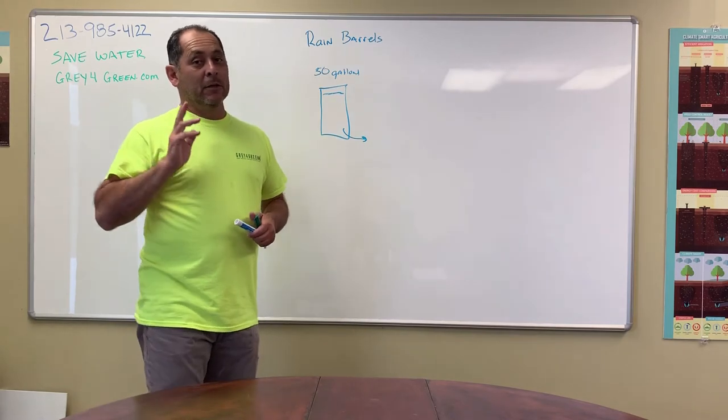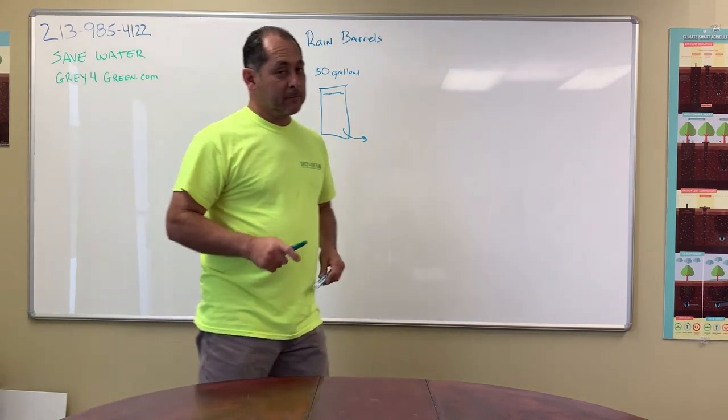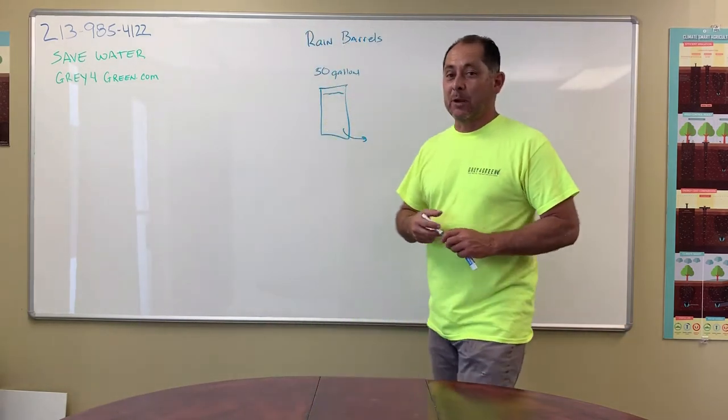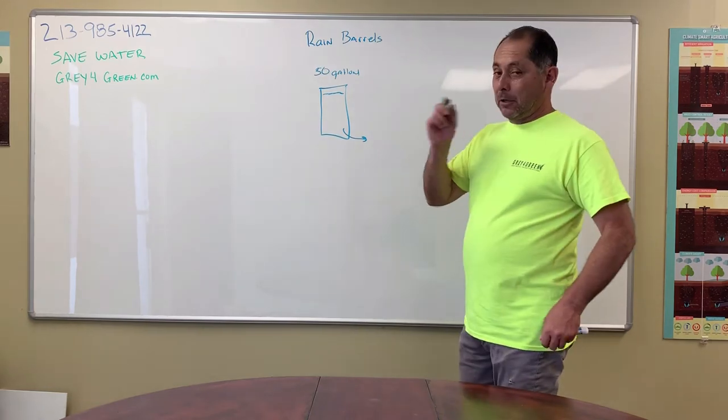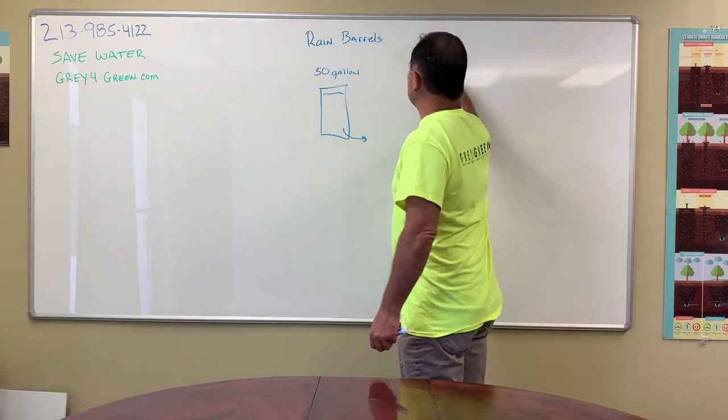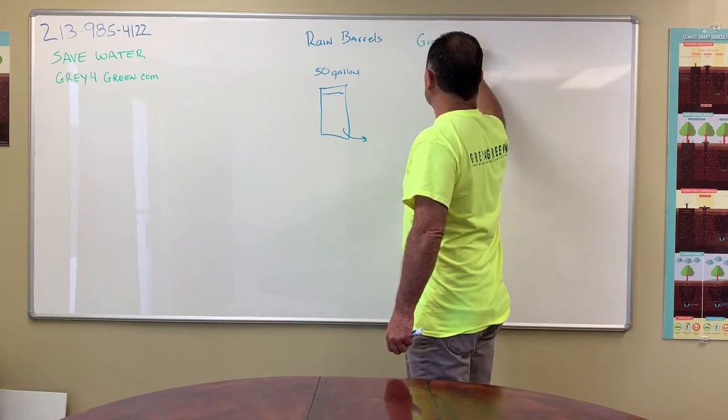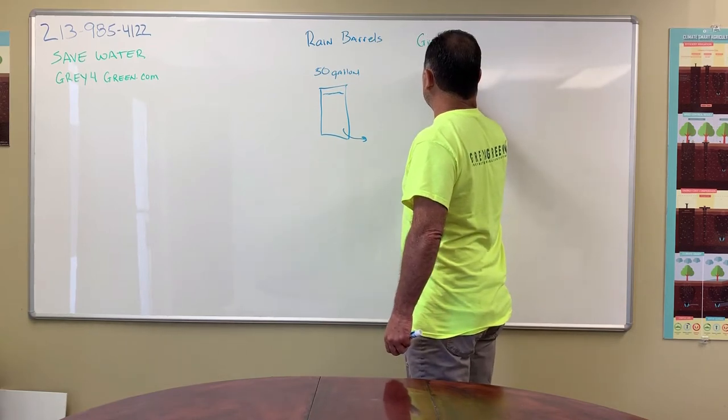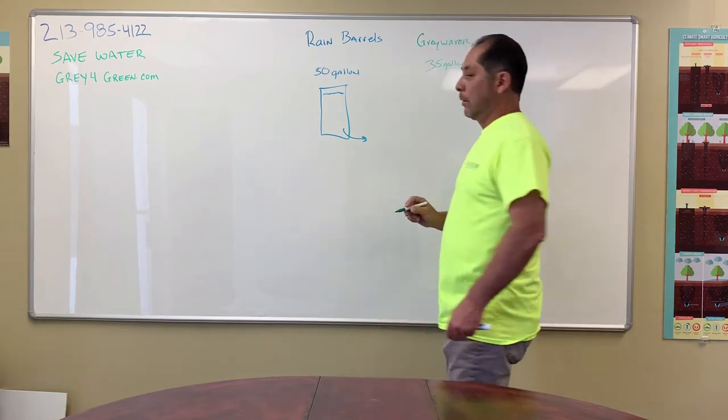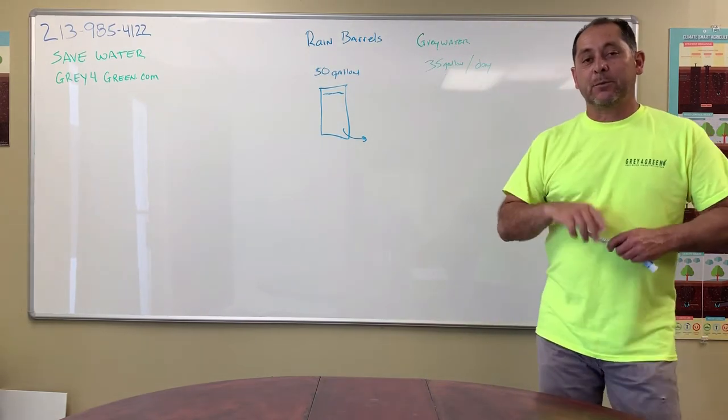Now you're going to make an investment. It's a little more investment. It's gray water. Gray water on average is going to generate 35 gallons a day. That's 35 gallons a day per person.